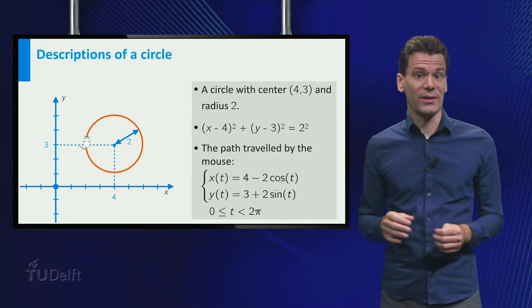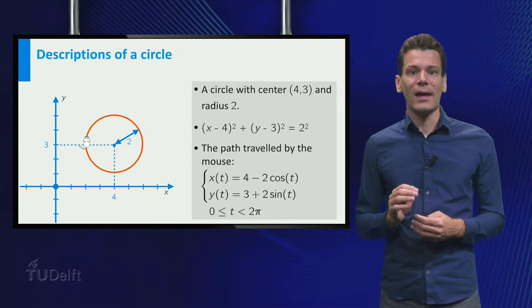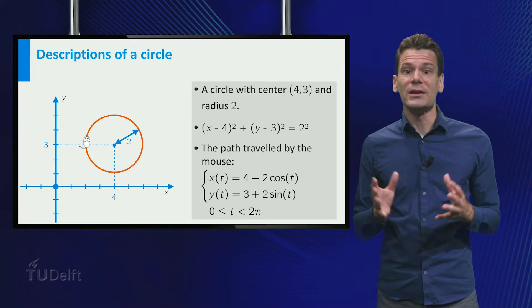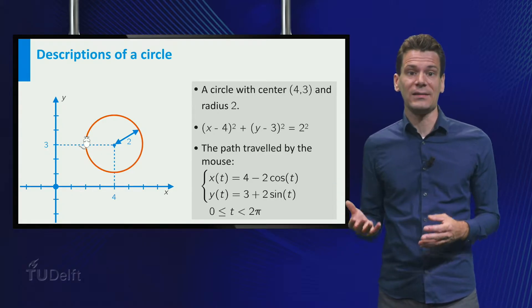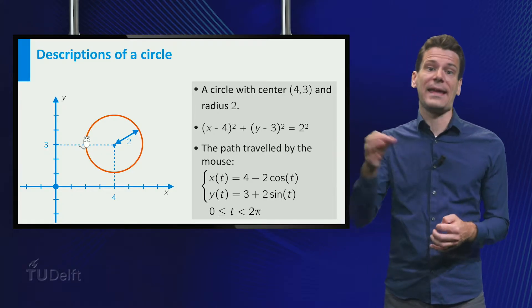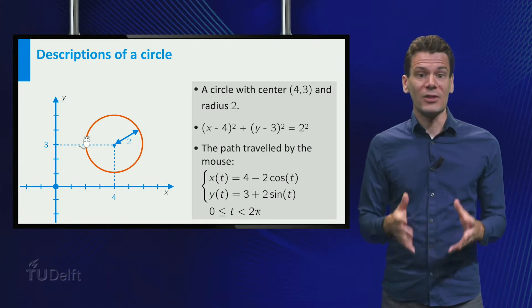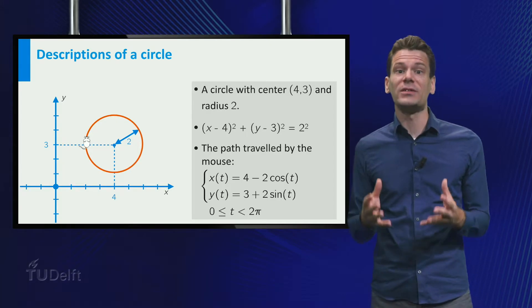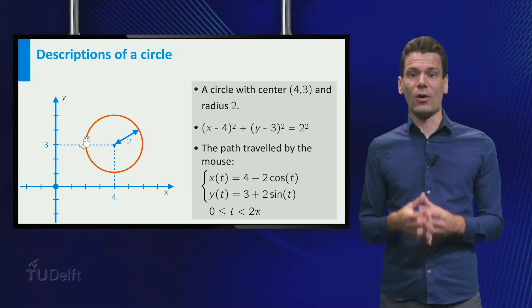This is called the parameter interval. Note that the mouse trail explicitly gives us all the points on our circle. For example, simply take a value of t in the parameter interval and plug it into the coordinate functions. This way we can find all points on the curve. We say that the parametrization is an explicit description of our circle.